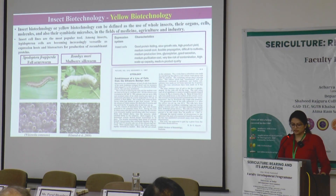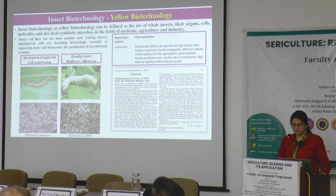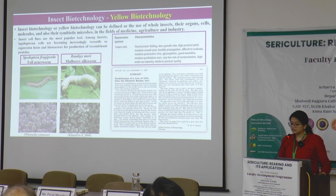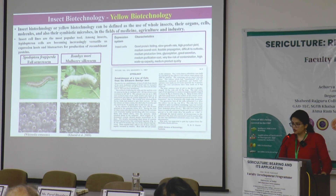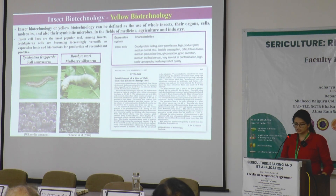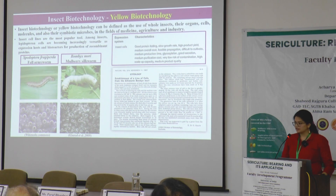What is insect biotechnology? Insect biotechnology, or yellow biotechnology — the name comes from the color of the hemolymph — can be defined as the use of whole insects, their organs, cells, molecules, and also their symbiotic microbes in the fields of medicine, agriculture, and industry.